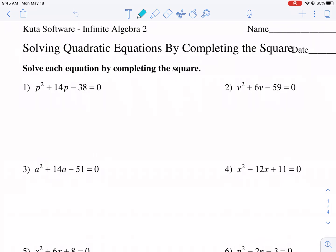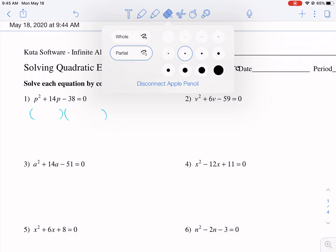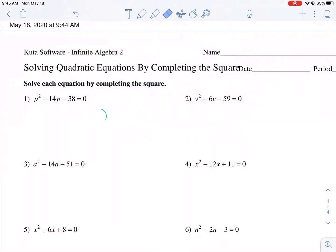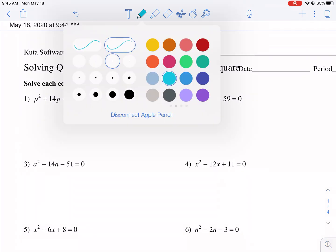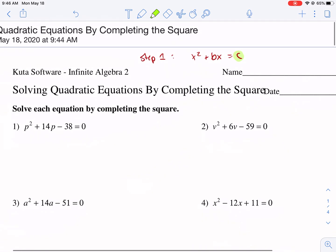Here we have p squared plus 14p minus 38. The temptation here is to try to get this into factor form, but there's another way to do these types of problems, and that is to complete the square. The first step for completing the square is to get it into the form where you have x squared plus bx equals c. So you want the numerical constant by itself on one side of the equal sign. Right now that's not the case here. We have this negative 38 still on the same side as the squared term, the variable squared term, and we don't want that, so we're going to add 38 to both sides. Once we get that, we get p squared plus 14p. I'm purposely leaving some space before the equal sign, and then I'll write positive 38.